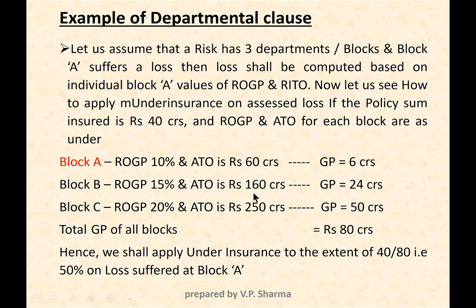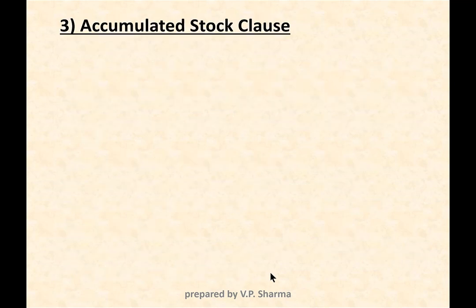For Block B, annual turnover is 160 crores and rate of gross profit is 15%, giving gross profit of 24 crores. For Block C, multiplying the respective values gives 50 crores. The total comes to 80 crores. The sum insured of the policy is only 40 crores, so the insured is under-insured. The assessed loss of Block A shall therefore be reduced by the factor 40/80, that is 50%.